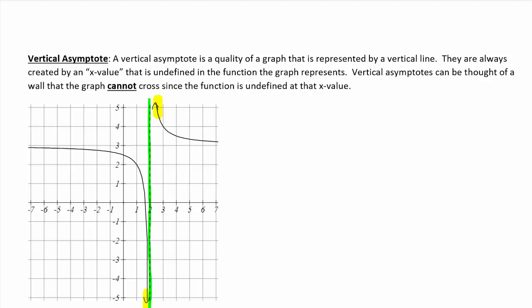We describe a vertical asymptote, horizontal asymptote, or slant asymptote by the equation of a line. The vertical asymptote in this case is a vertical line. Hopefully we remember from our previous course that would be x equals — and in this case it's x equals 2, because it is occurring at 2. So we describe them with equations of lines.